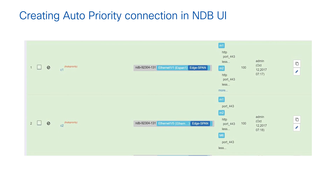Let's look at how we create this in auto priority connections. We go to the connection module and click on 'Create Auto Priority Connections.' When you choose auto priority connections, there is no priority input — the priority column itself is not highlighted. I achieved this by creating two connections, C1 and C2, each labeled with the superscript 'Autopriority,' indicating they are auto priority connections.